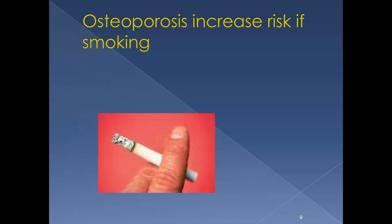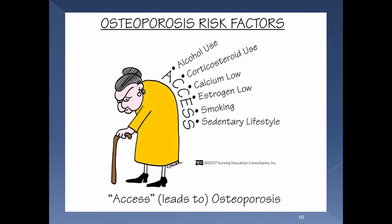So we talked about how smoking will increase the risk of osteoporosis. Here is a summary of what leads to osteoporosis: alcohol use, corticosteroids, low calcium, low estrogen, smoking, and sedentary lifestyle.